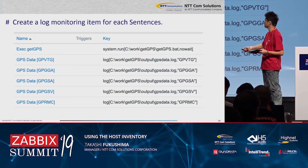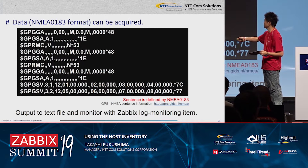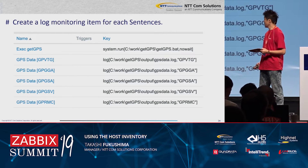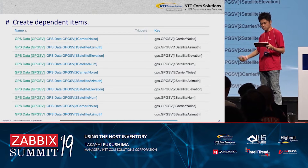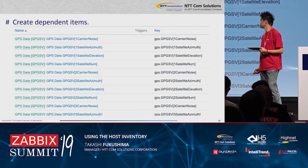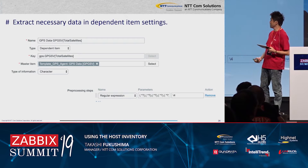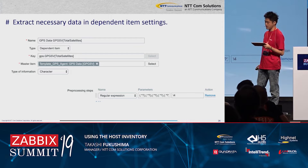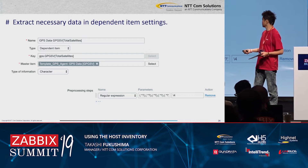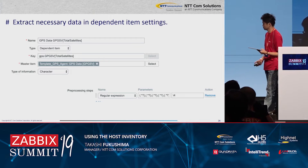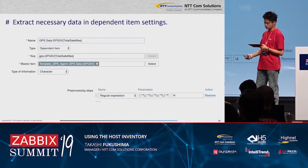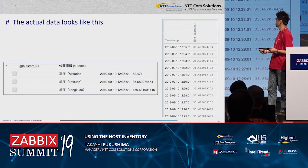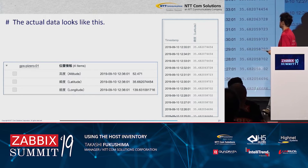The text file was monitored by Zabbix. First, create a log monitoring item for each NMEA sentence — this one, this one, this one, this one, this one. Next, create dependent items. Finally, extract necessary data in dependent item settings using a regular expression. The actual data looks like this: latitude and longitude. This data is stored as history.